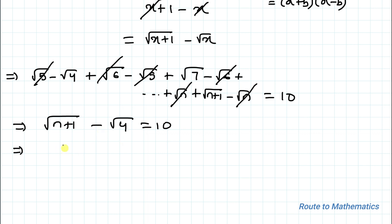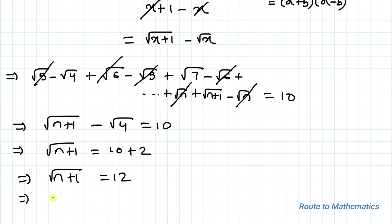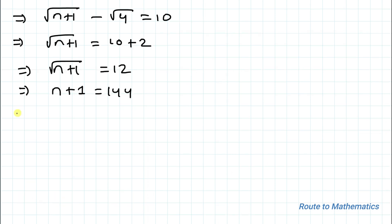Since n is a positive integer, we write √(n+1) = 10 + 2 = 12. Squaring both sides: n+1 = 144, so n = 143 is our answer. I hope you understood the solution. Thanks for watching — please subscribe to my channel and click the bell icon for more interesting videos.